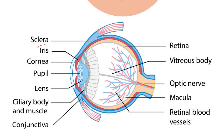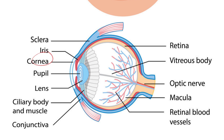The iris is the colored part of the eye that surrounds the pupil. It controls the amount of light that enters the eye by adjusting the size of the pupil. The pupil is the black hole in the center of the iris — it allows light to enter the eye.